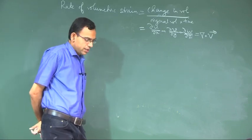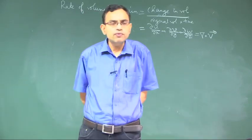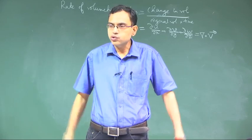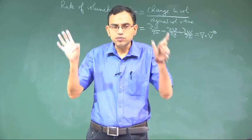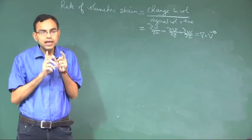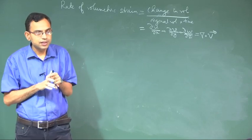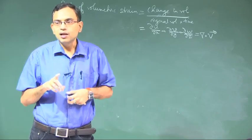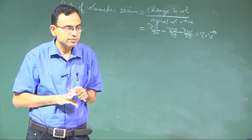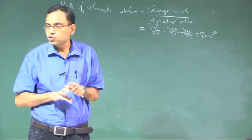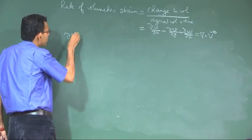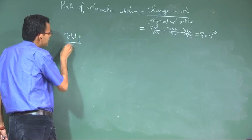We have now discussed all sorts of deformation: linear, volumetric, angular — including shear and rotation. The common element in all these expressions is essentially a special partial derivative of some component of velocity. The rate of deformation, the generalized rate of deformation, can be expressed in this form.